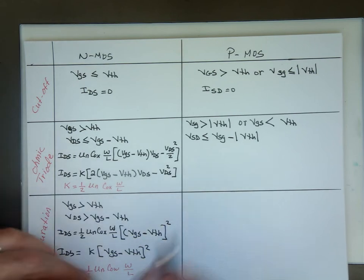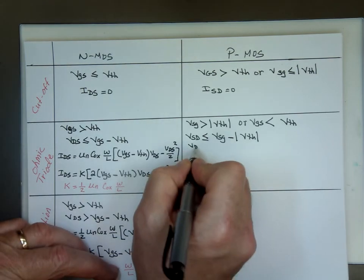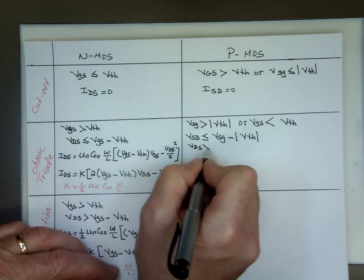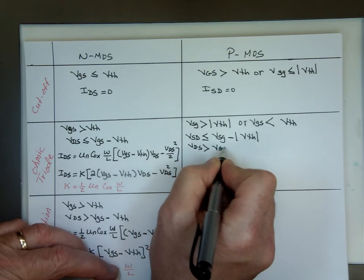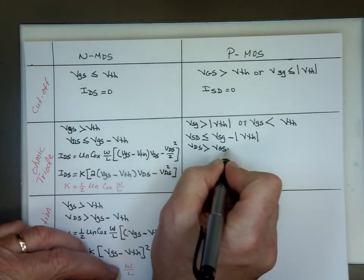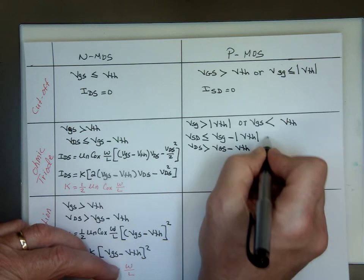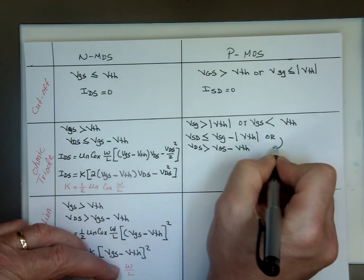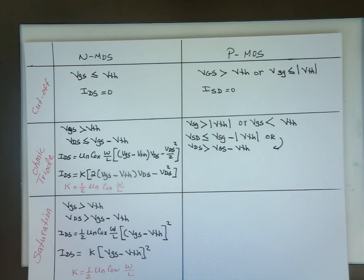And you want VSD, not DS, I'll convert that to DS in a minute, to be less than or equal to VSG minus the absolute value of V threshold. Which you can write that VDS is greater than VGS minus V threshold. So this or the one below it or that one. You can use either one.